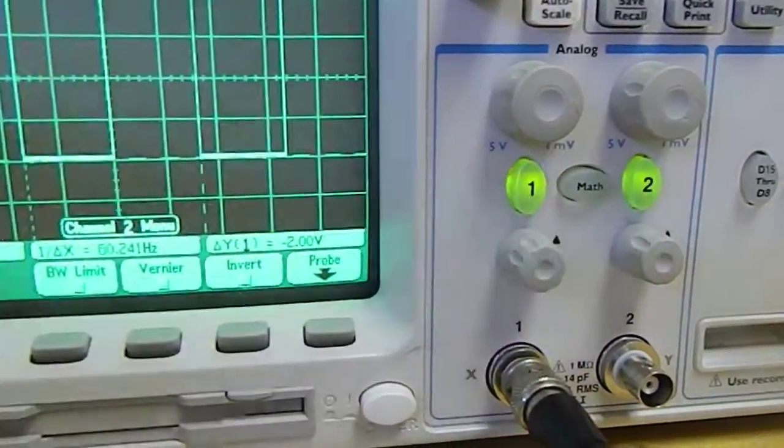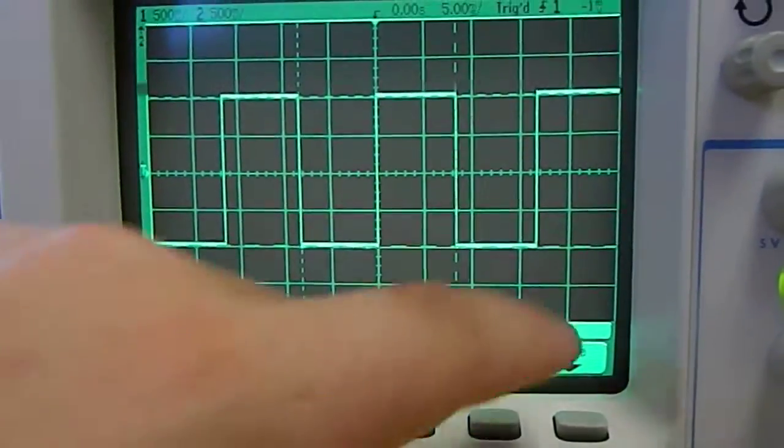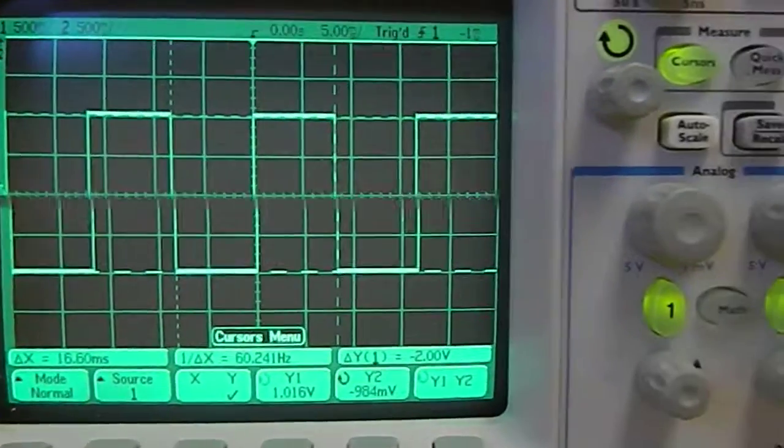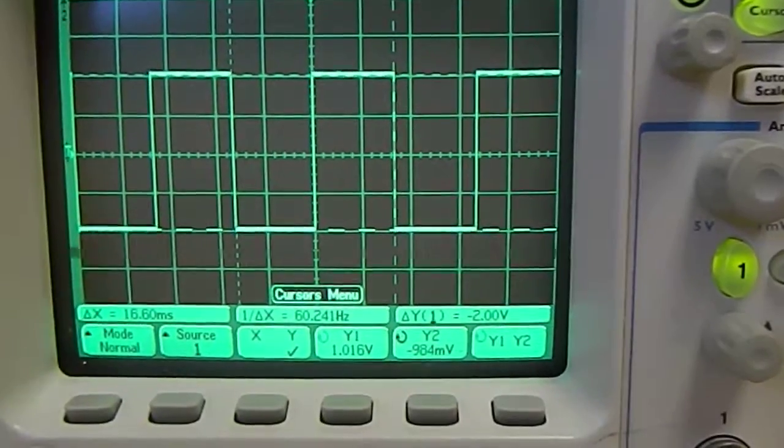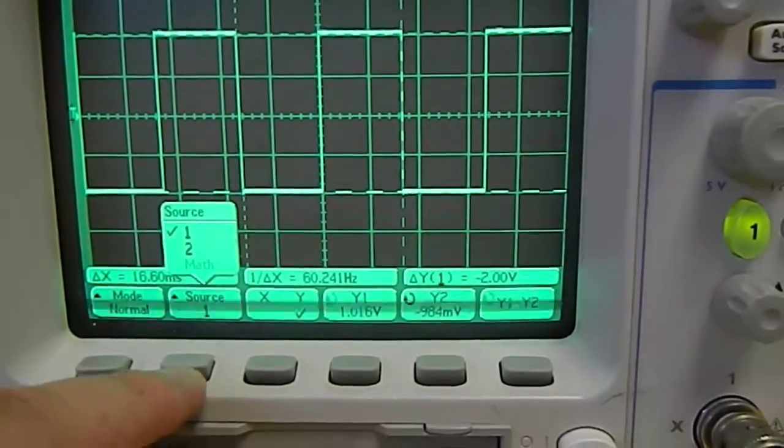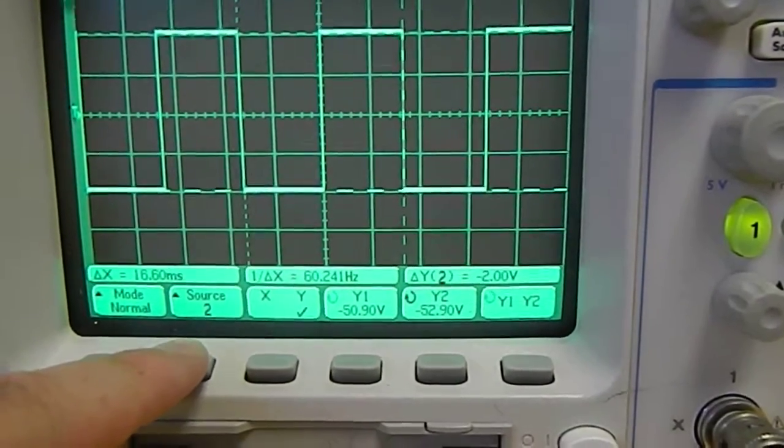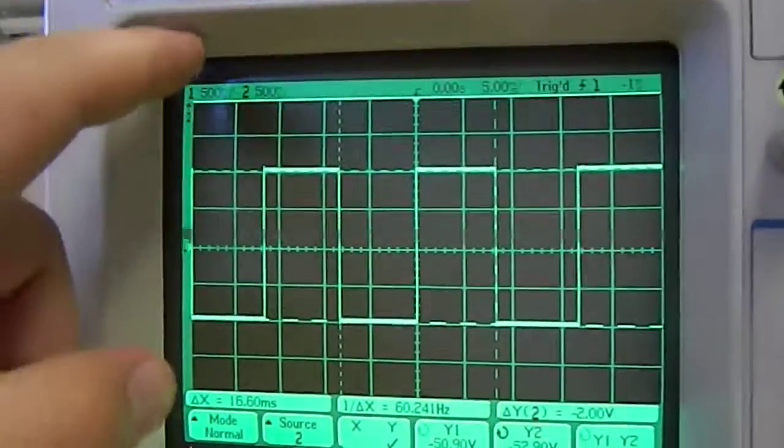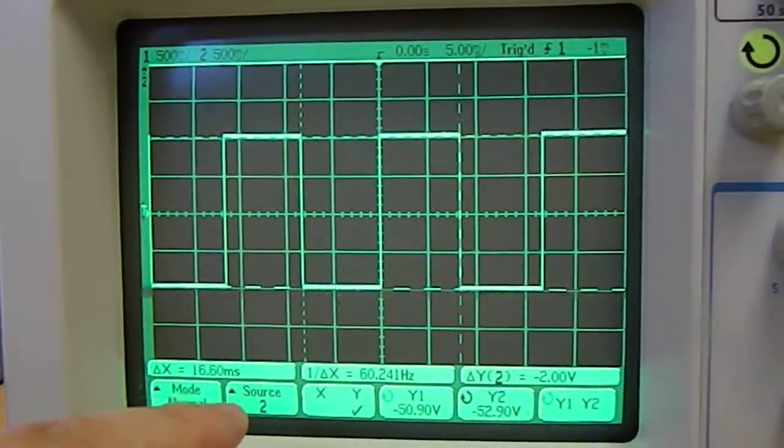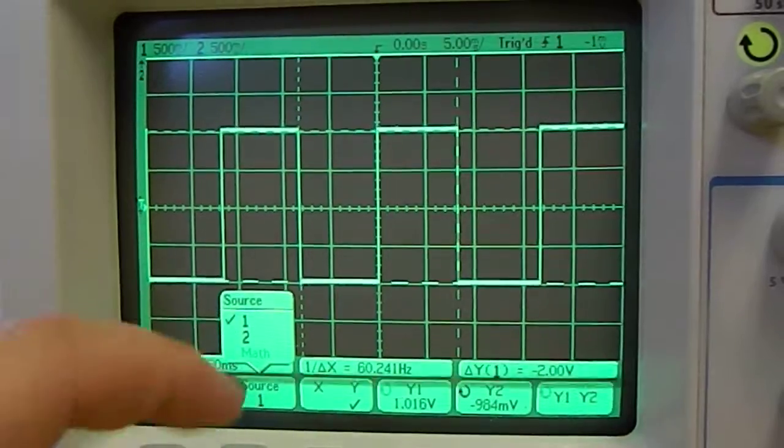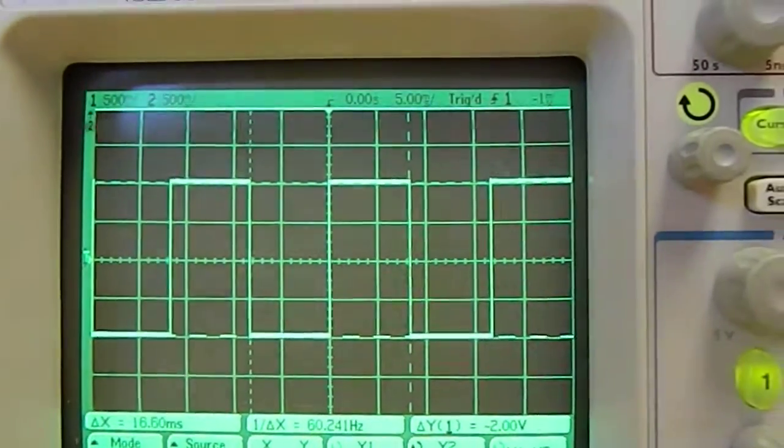Actually, if I even turn on channel 2 and come back to cursors, then I could choose source, I could choose channel 2, and depending on what the scale of channel 2 is, the measurement may be different than it would for channel 1.